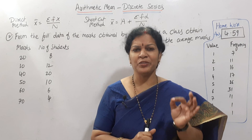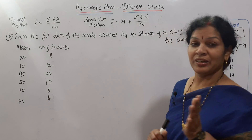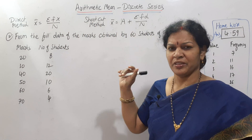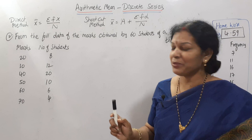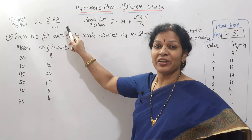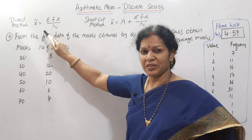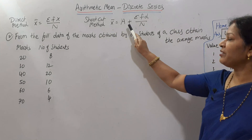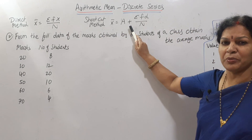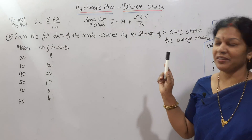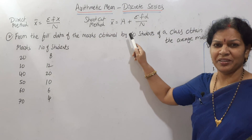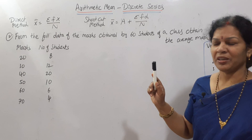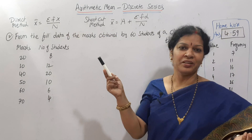First of all, you have to remember the formula for discrete series. There are two methods: the direct method and the shortcut or indirect method. As per the direct method, the formula is X̄ = ΣFX / N. As per the shortcut method, the formula is X̄ = A + ΣFD / N, where A means assumed mean.